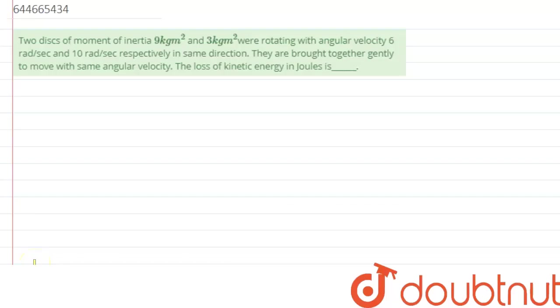We are given a question which says two disks of moment of inertia 9 kg meter square and 3 kg meter square were rotating with angular velocity 6 radian per second and 10 radian per second respectively in the same direction. They are brought together gently to move with same angular velocity. We need to calculate loss of kinetic energy in joules.